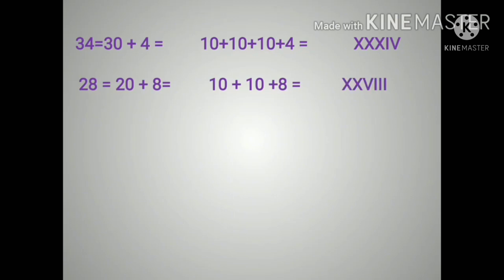Now let us do some exercises based on this. 34 is written as 30 plus 4 and that can be written as 10 plus 10 plus 10 plus 4 which is equal to XXXIV. Next, 28 which is equal to 20 plus 8 which can be written as 10 plus 10 plus 8 and as X stands for 10 we have XX and for 8 we have VIII.